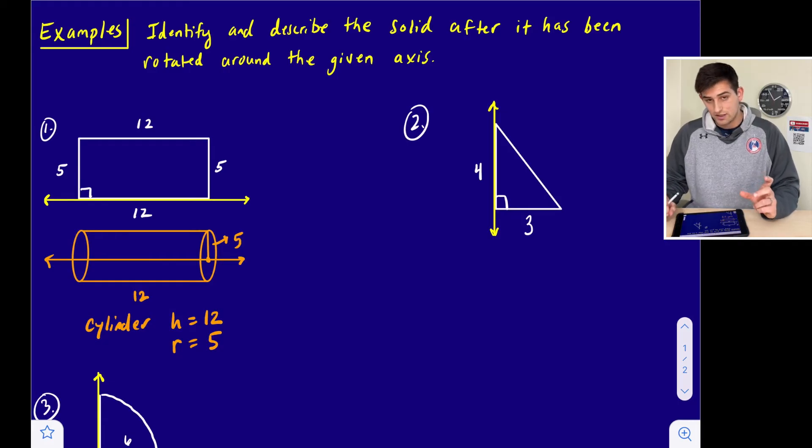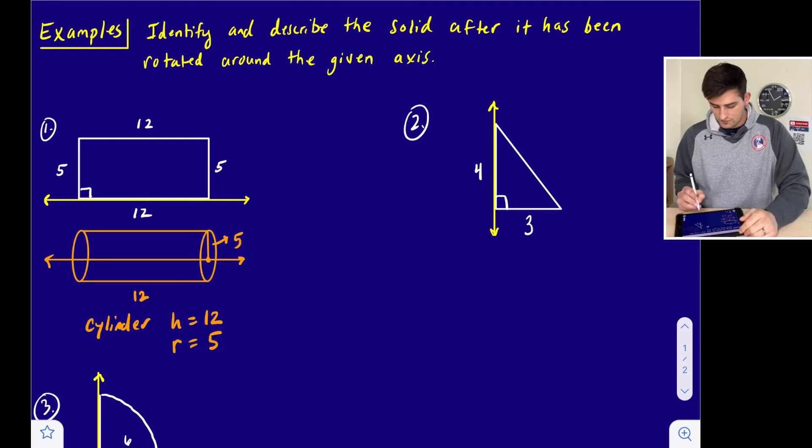Let's look at number two. Now we have a right triangle that has a base, or one of its legs is three, its horizontal leg, and the vertical leg is four, and this time our axis is vertical. So we're going to rotate it around this way. If you can think about that happening, it's going to give us a cone.